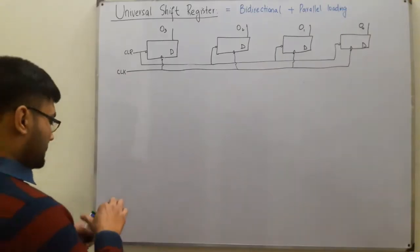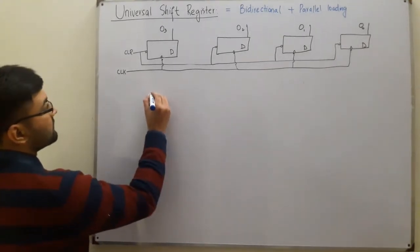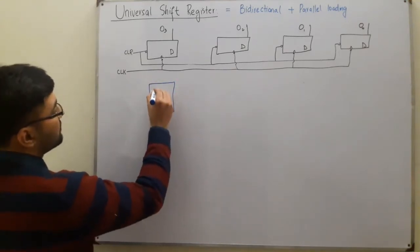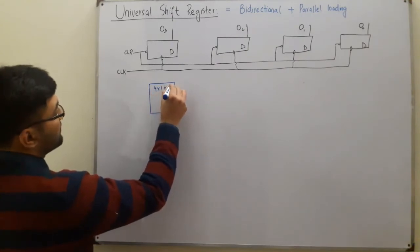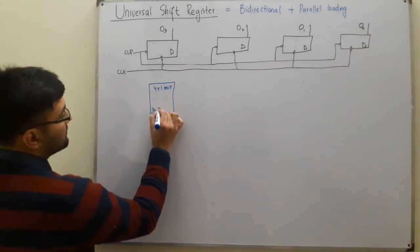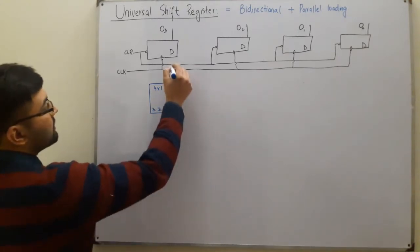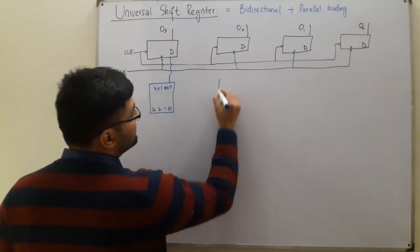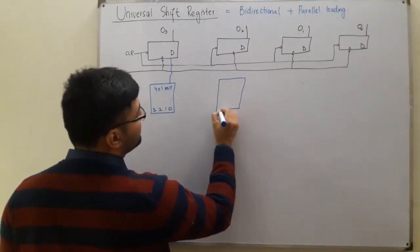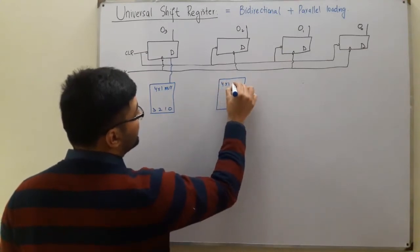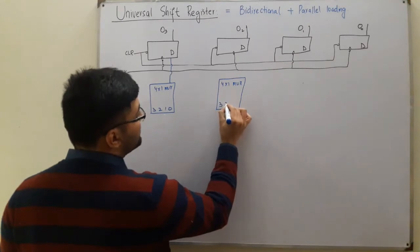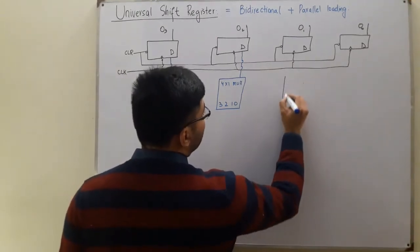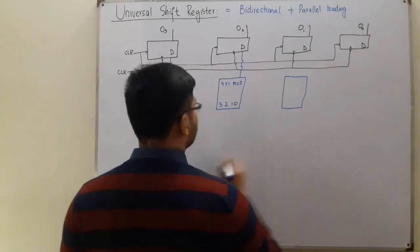We also have multiplexers in this circuit. We have 4x1 multiplexers, each with four inputs labeled 3, 2, 1, and 0. The output of each multiplexer is connected to the D input of the corresponding flip-flop. Let me draw the next 4x1 multiplexer — again with inputs 3, 2, 1, and 0 connected to the input of the next D flip-flop.